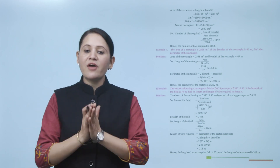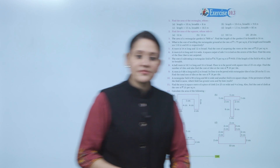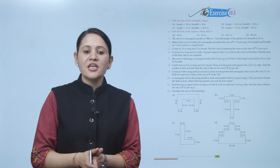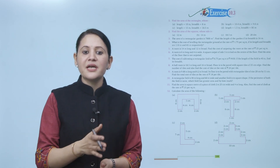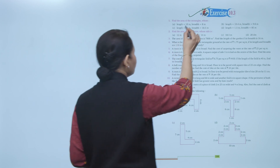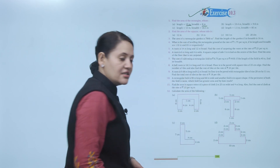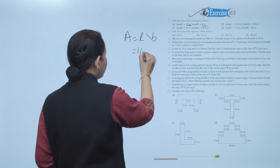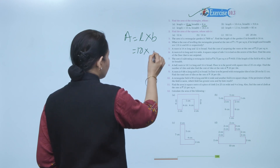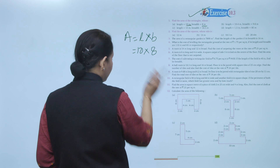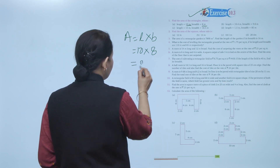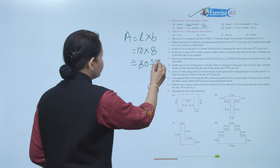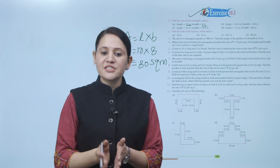Some more examples are given — you have to practice them all. Next is Exercise 10.3. Find the area of a rectangle whose length is 10 meters and breadth is 8 meters. Both are in the same unit, meters. Area of rectangle equals L times B, so 10 times 8 equals 80 square meters. Practice all the questions of this exercise.